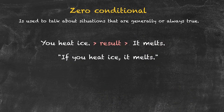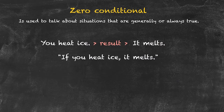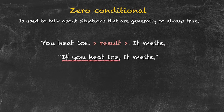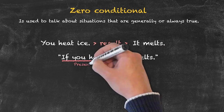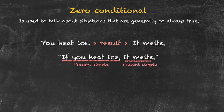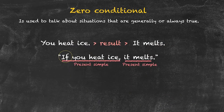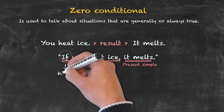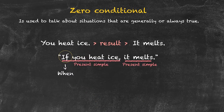Let's have a look at the structure of this sentence. The first part of the sentence — the first clause — 'if you heat ice' is using the present simple tense. The second clause is also using the present simple. And we have 'if' at the beginning. 'If' could be substituted by 'when' to indicate the total certainty of the thing happening.